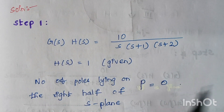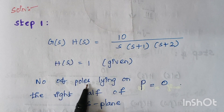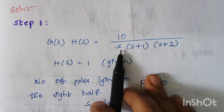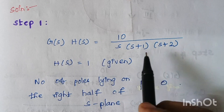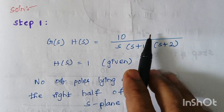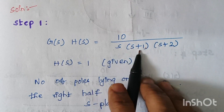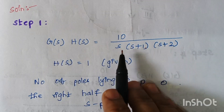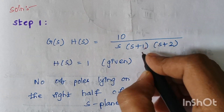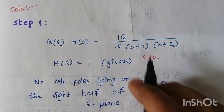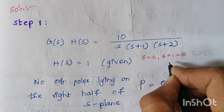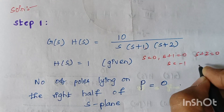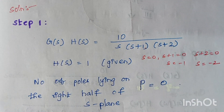The first step is checking the number of poles which lie on the right hand side of the S-plane. The denominator term contributes poles and the numerator terms are known as zeros. When you equate the denominator terms to zero: S equals zero, S plus 1 equals zero gives S equals minus 1, and S plus 2 equals zero gives S equals minus 2.